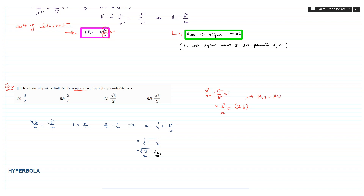Using the relation 2b²/a = b, we get b = a/2, so b/a = 1/2. Hence the eccentricity, which is the square root of 1 - b²/a², becomes the square root of 1 - 1/4 = √(3/4) = √3/2. So √3/2 is option C, and the correct answer is C.